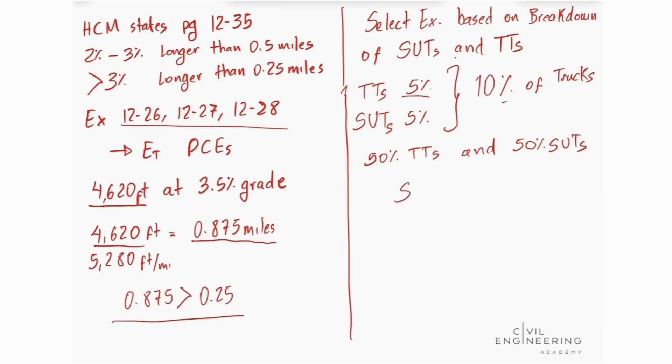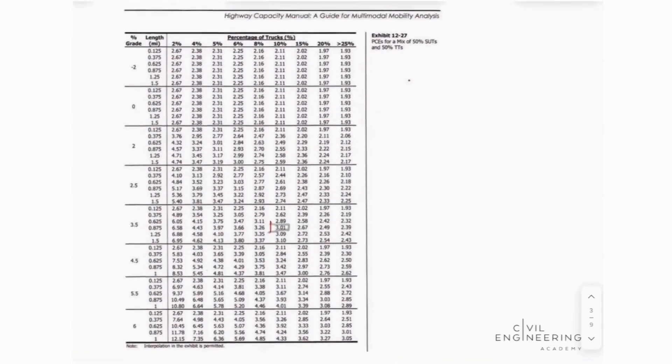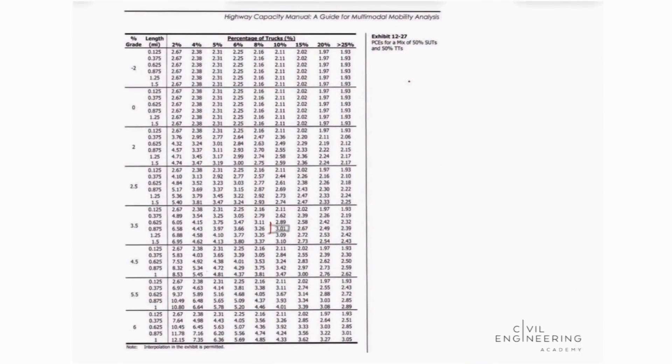So our PCEs for a mix of 50% SUTs and 50% TTs. So this is the exhibit. And we're going to be looking at this value, because we have 3.5% grade. Our length is 0.875. So we cross here. And here we have 10% of trucks. So this column. This is our value.